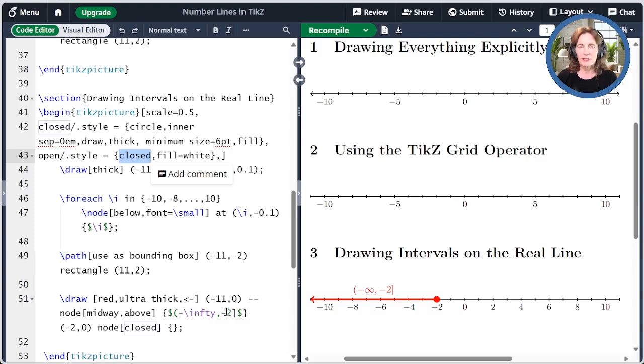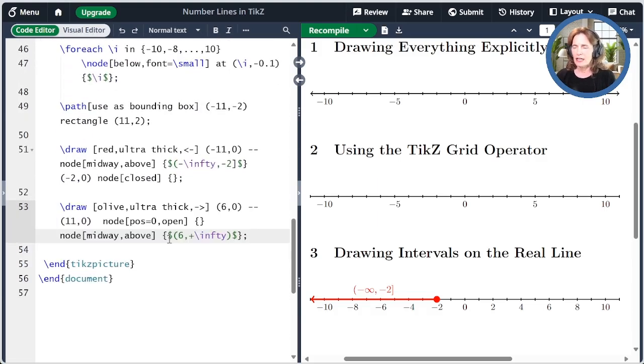Now I can draw the open interval 6 to infinity. Let me paste that code here. I'm going to draw it in olive, and I'm going to draw it ultra thick. What I'm doing here in this little segment of code is I'm adding a node at position 0 that is an open style node. So we get this open circle there that's filled with white.